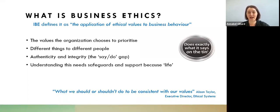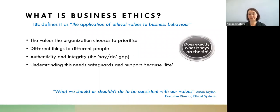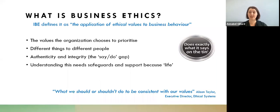There is authenticity and integrity as part of that — limiting the 'say-do gap,' or as others put it, the Ronseal test: does it do what it says on the tin? It's sometimes difficult because life happens, time is short, people make mistakes. It's not about attaining something impossible and perfect; it's about aiming to align your behavior with your values and building in safeguards. Alison Taylor describes it as 'what we should or shouldn't do to be consistent with our values.'